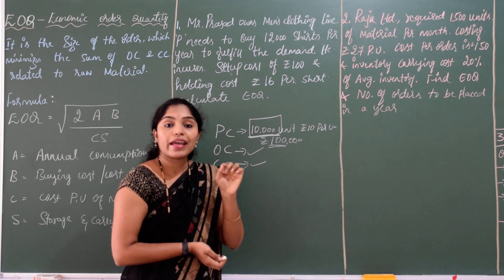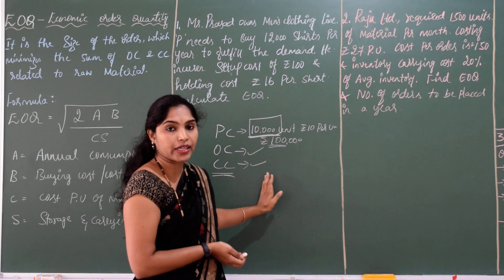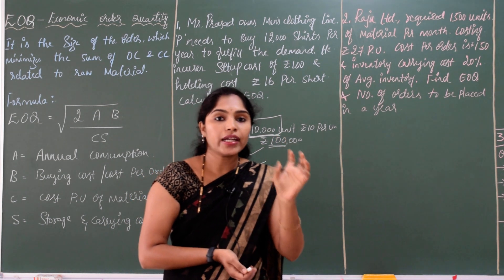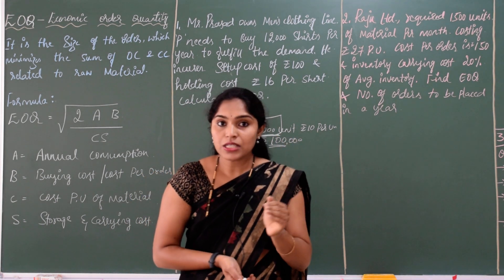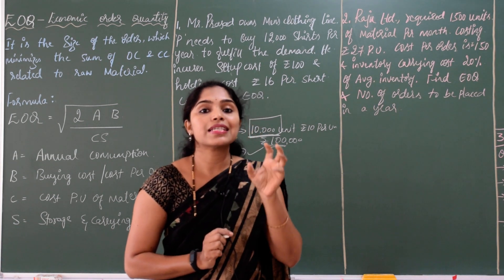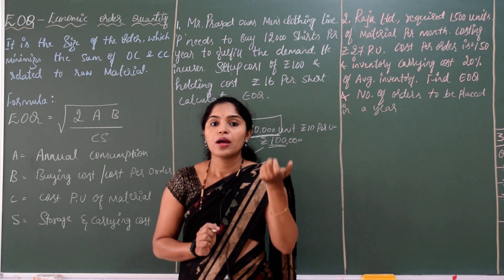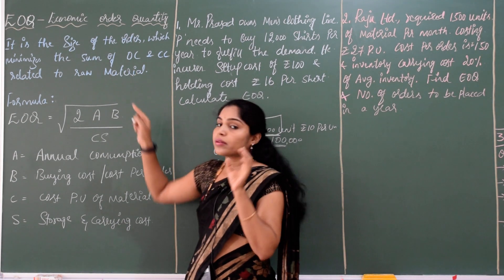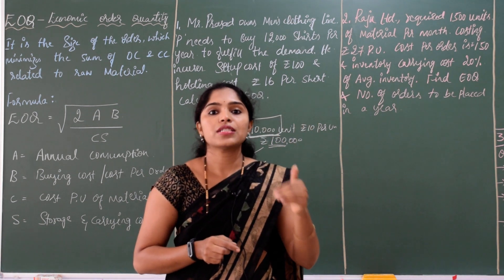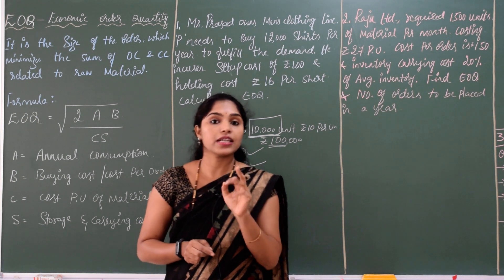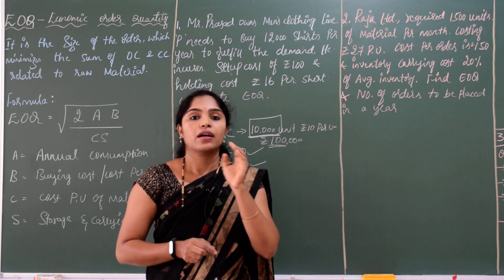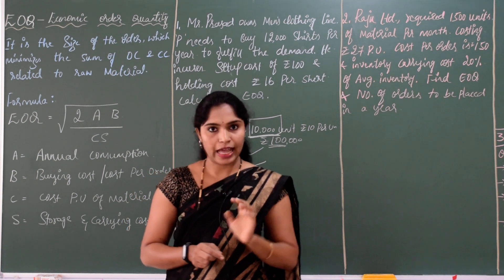We have to be very careful when purchasing raw materials. Before purchasing, we must decide the quantity — that is the Economic Order Quantity — which reduces both ordering cost and carrying cost.